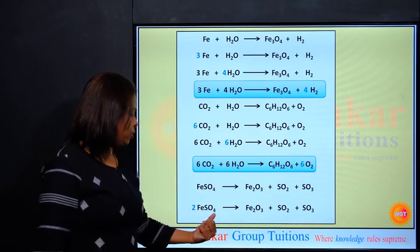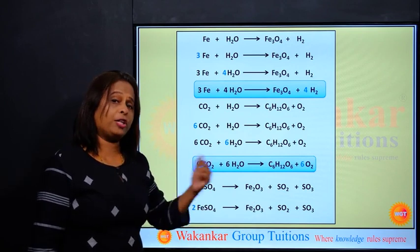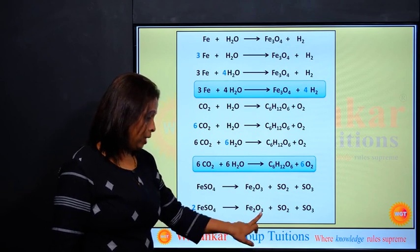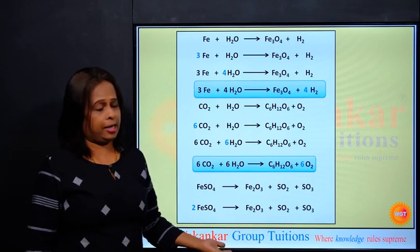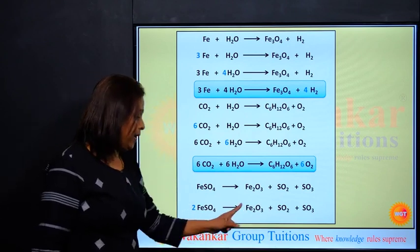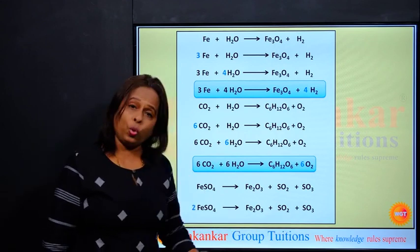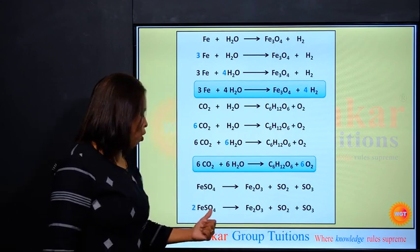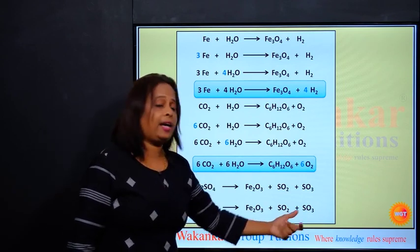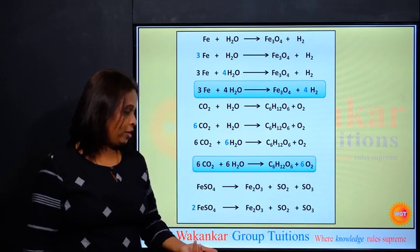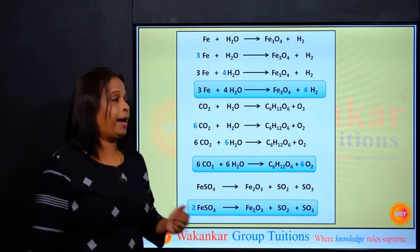How many oxygen? 4 times 2 are 8 oxygen. How many oxygen on the right hand side? 3 plus 2, 5 plus 3, 8. Everything is getting balanced. 2 Fe, Fe2. 2 S, 1 and 1, 2 S. Oxygen 4 times 2 are 8. 3 plus 2, 5 plus 3, 8. It is balanced. So this becomes your final equation.